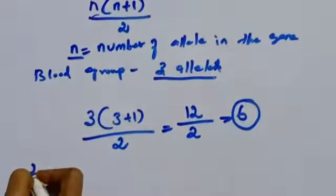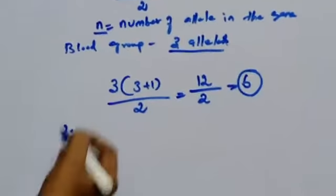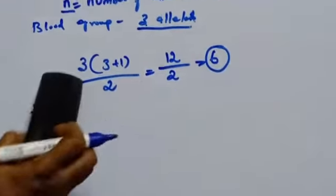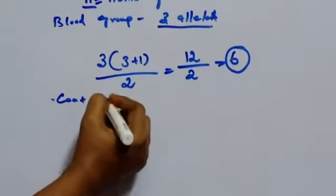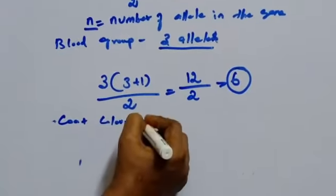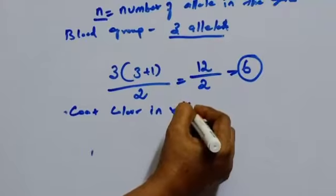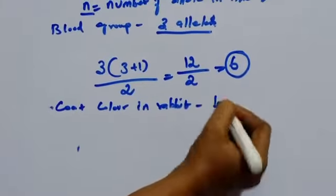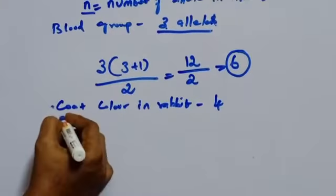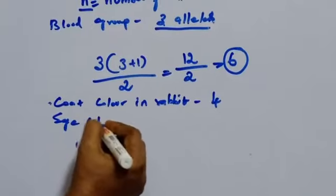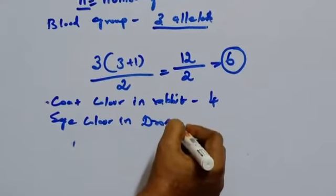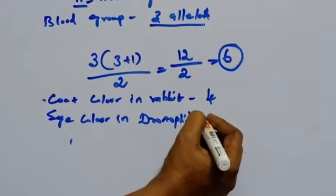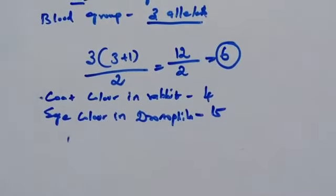Then second example is some more examples for multiple alleles. Coat color in rabbit. Coat color in rabbit is controlled by how many alleles you know? Four. Then eye color in Drosophila. Eye color in Drosophila is controlled by 15 alleles.